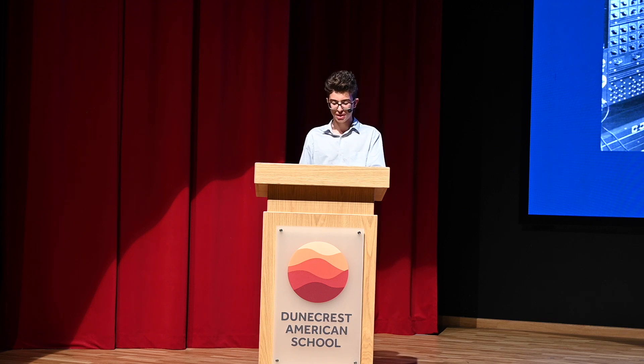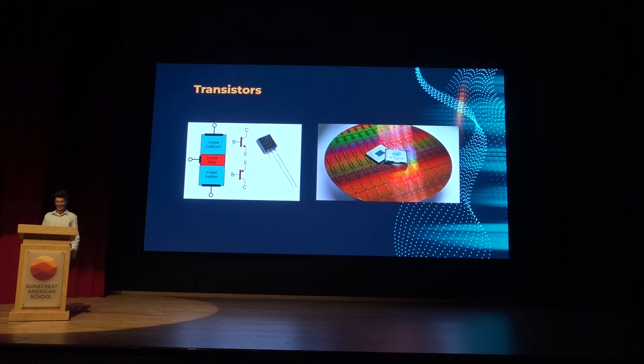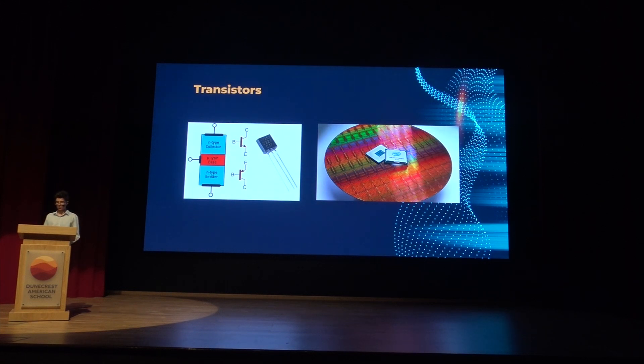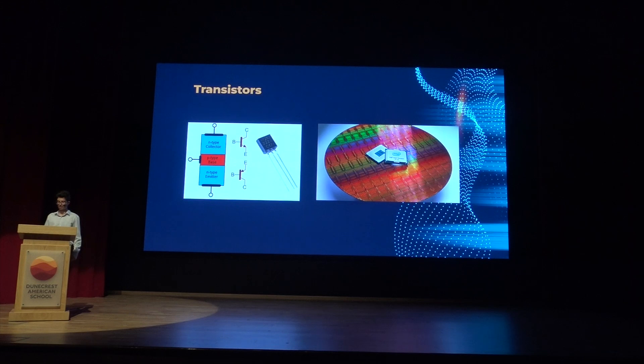However, vacuum tubes were prone to failure due to overheating, the limited lifetime of the cathode, and the fragility of the glass envelope, requiring frequent and costly replacements. As technology progressed, the era of vacuum tubes came to an end with the revolutionary discovery of the transistor. In the 1950s and 1960s, there was a need to develop smaller and more efficient computers. The transistor no longer suffered from the weak points of the vacuum tube, as it had no moving or fragile parts, relying on semiconductor materials instead.